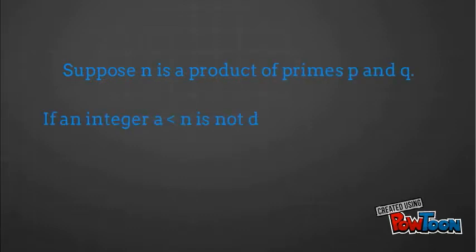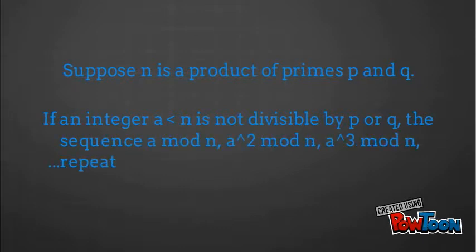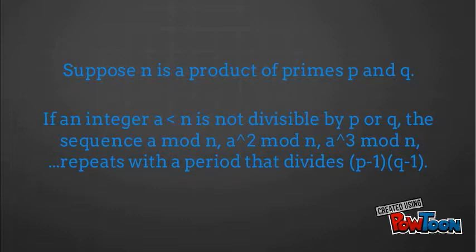Here is the mathematical basis. Suppose n is a product of primes p and q. If an integer a less than n is not divisible by p or q, the sequence a mod n, a squared mod n, a cubed mod n, and so on, repeats with a period that divides p minus 1 times q minus 1.